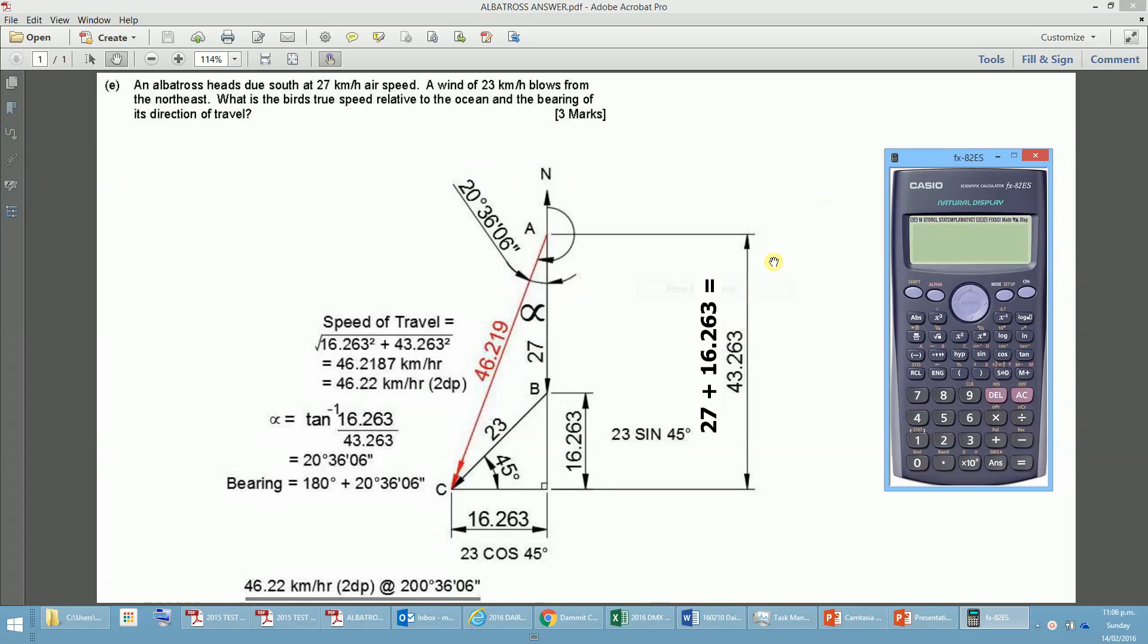An albatross heads due south, and we're going to use vectors to solve this, at a speed of 27 kilometers per hour. A wind of 23 kilometers per hour blows from the northeast. What is the bird's true speed relative to the ocean and the bearing of its direction of travel?